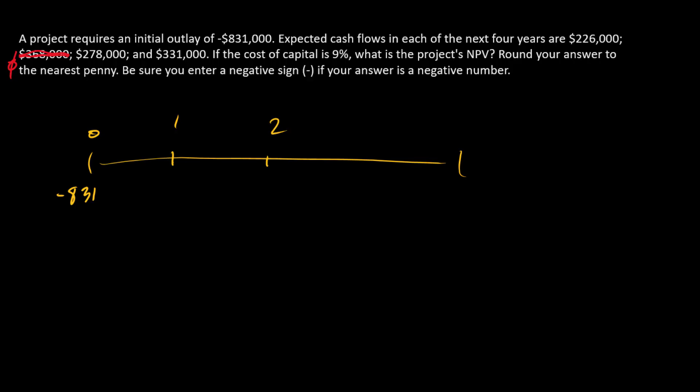We're still going to have four periods, but the cash flows are 226, 278, and 331. Just make sure that zero is there and our math will be correct.